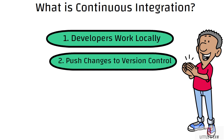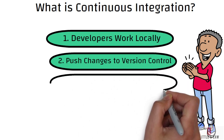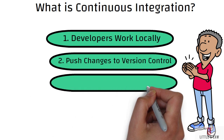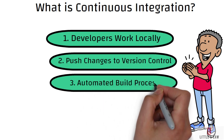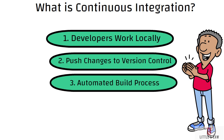The third step is the automated build process, which is triggered by the CI server. Upon pushing the changes to the version control system, the CI server — for example Jenkins, Travis CI, or Circle CI — detects the new code through web hooks or polling mechanisms. The CI server then triggers an automated build process for the project associated with the newly pushed code.